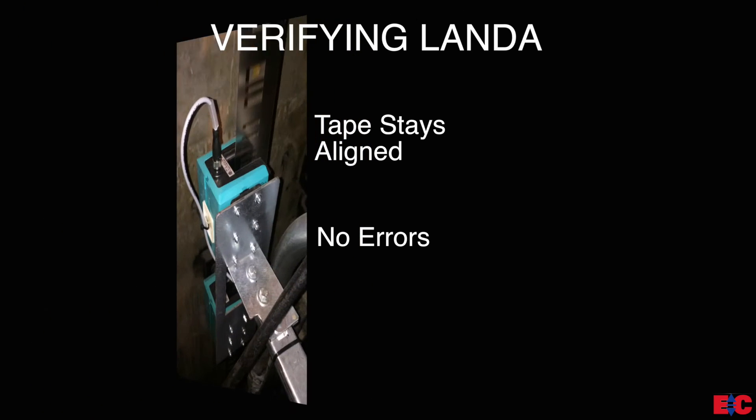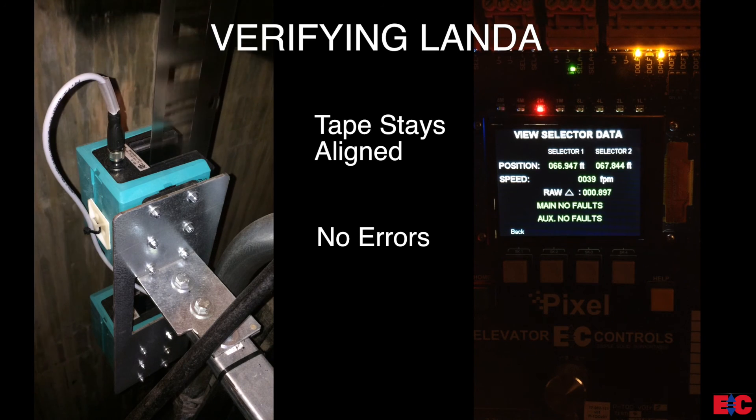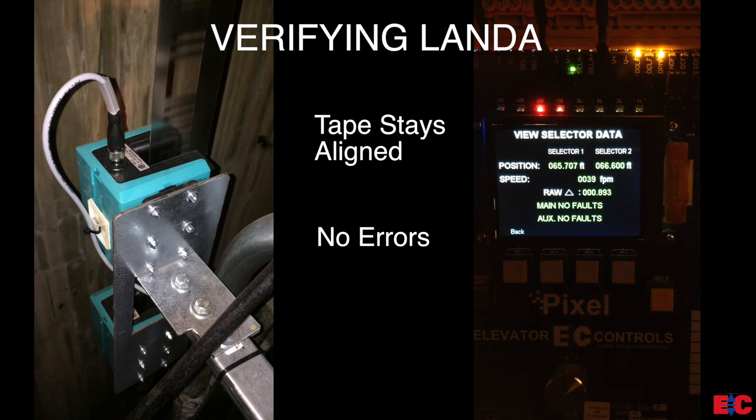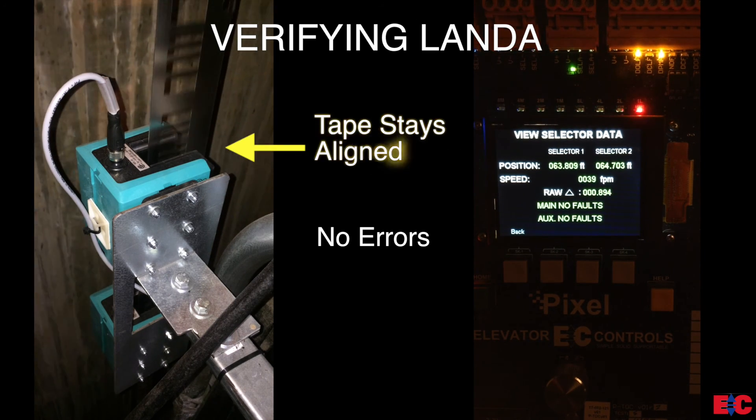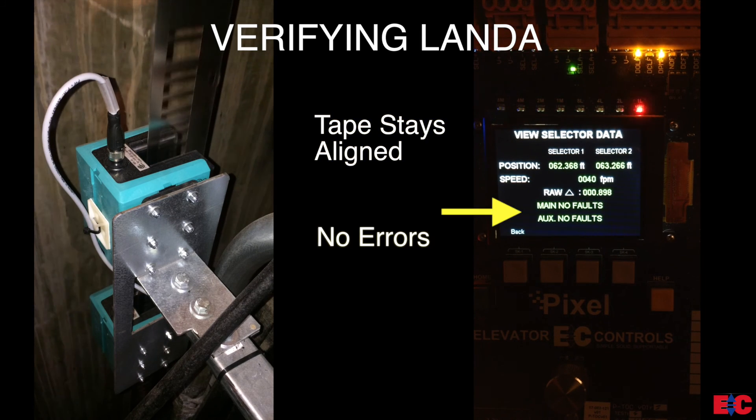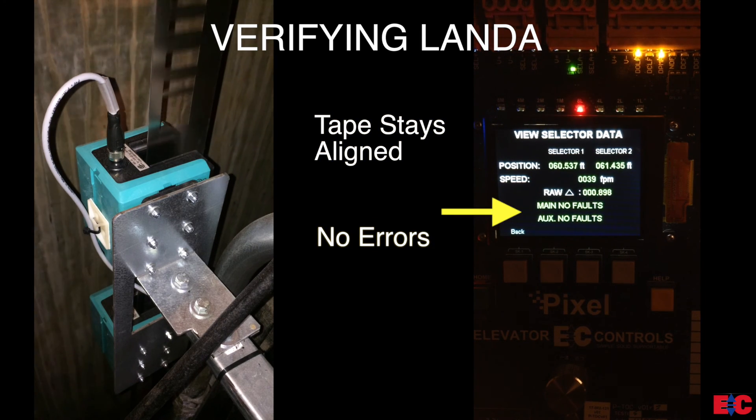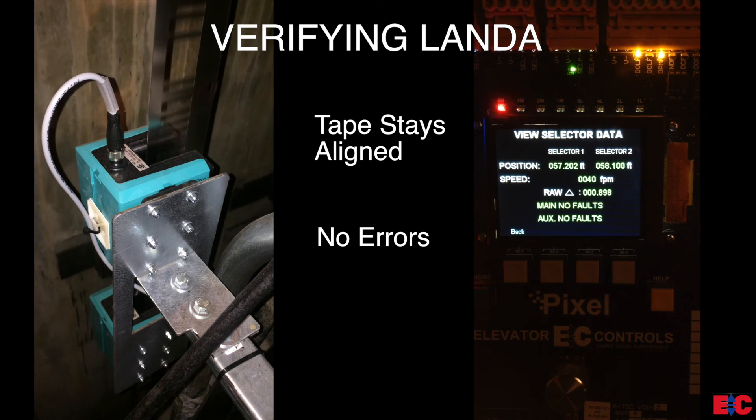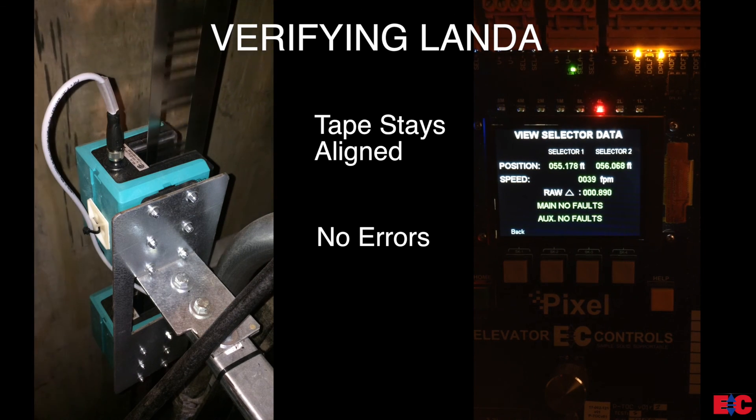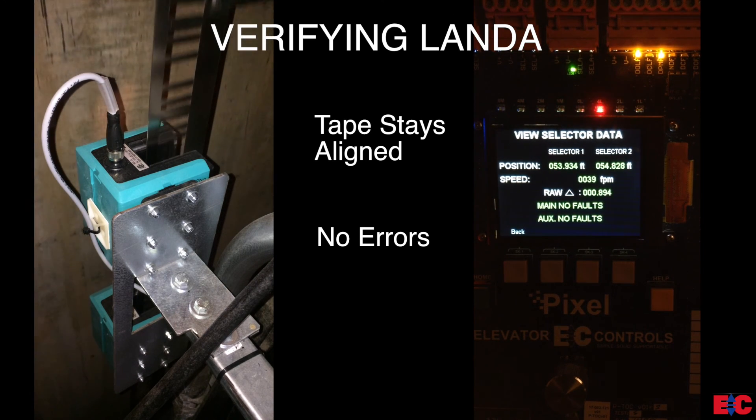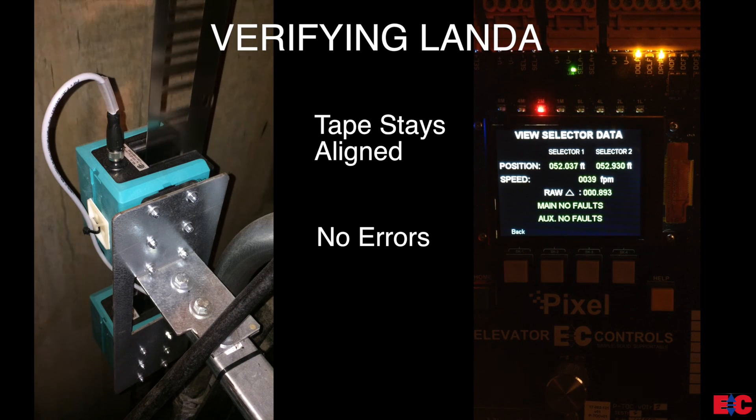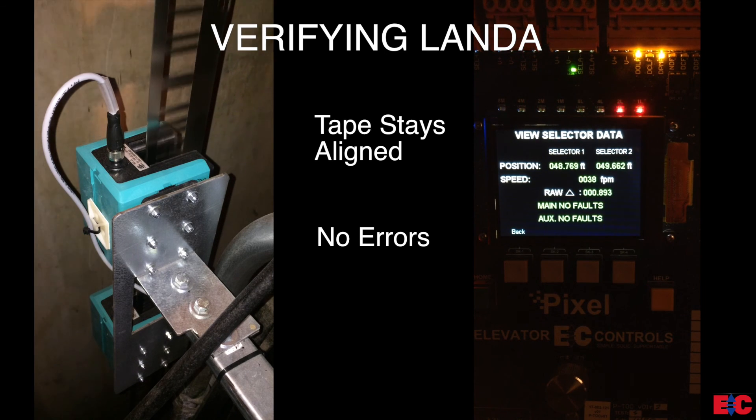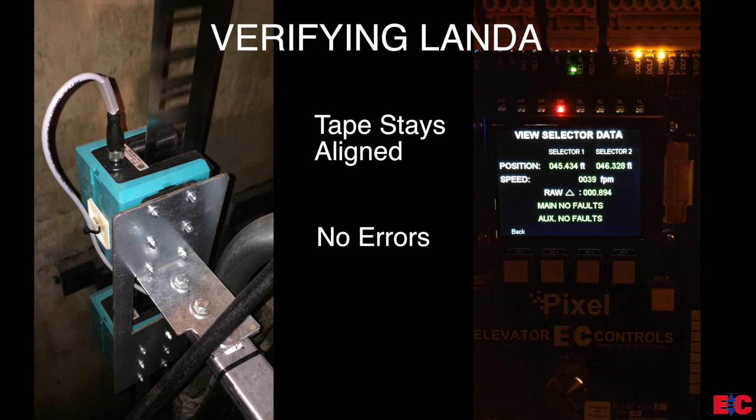Our final step is to verify the Lambda installation. While running the car on inspection up and down the hoist way, verify that the Lambda tape stays aligned within the Lambda tape readers and that there are no errors being displayed on the view selector data window, which can be located in the install window of Pixel. Also, verify that the selector 1 or main Lambda tape reader position is of a lower value than that of selector 2 or the auxiliary Lambda tape reader position. This is due to the main Lambda tape reader being located on the bottom of the Lambda tape reader bracket.